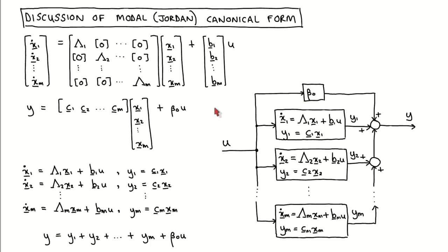All of these systems have the same general form where the A matrix or capital lambda matrix is in block diagonal form. By this we mean that there are a number of square blocks, lambda 1 to lambda m, arranged on the diagonal and the rest of the entries in the matrix are zero.